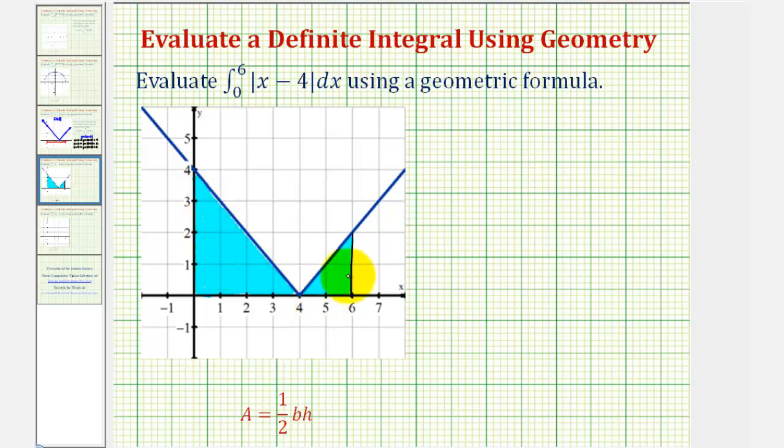And because these two areas are triangles, if we find the sum of these two areas, it will be equal to the given definite integral. So let's call this area sub one and call this area sub two.